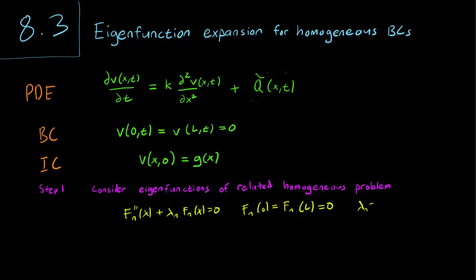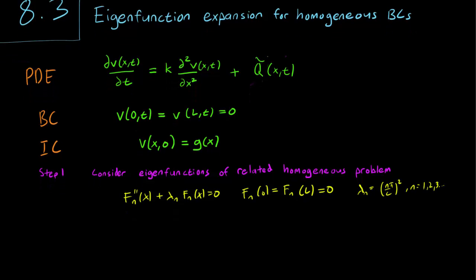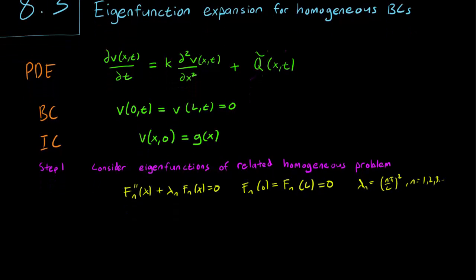And the lambda_n are of course the (n*pi/L)^2 that we are so familiar with by this point. And the goal here is to write down our V as a combination of this F_n.